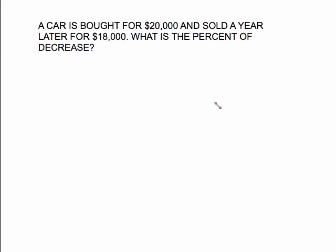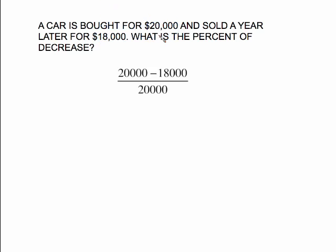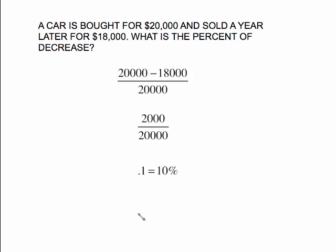Another one: a car is bought for twenty thousand and sold a year later for eighteen thousand. This went from twenty thousand down to eighteen thousand, so we're asked for the percent of decrease. Subtract these values — that goes on top — and the bottom is the original amount, twenty thousand. That gives two thousand over twenty thousand. Use your calculator, dividing two thousand by twenty thousand gives you the decimal point one. Move the decimal point two places to the right and that gives us a ten percent decrease.